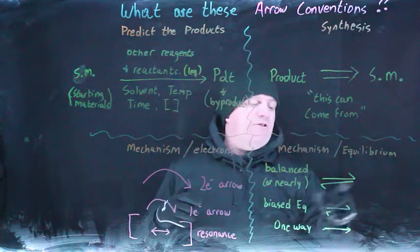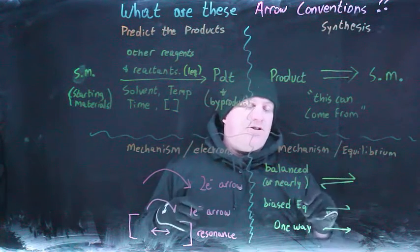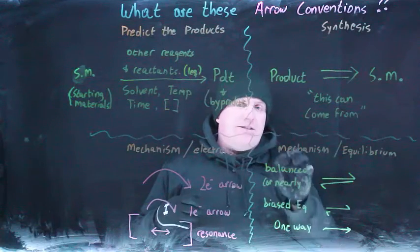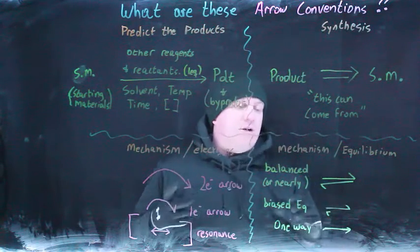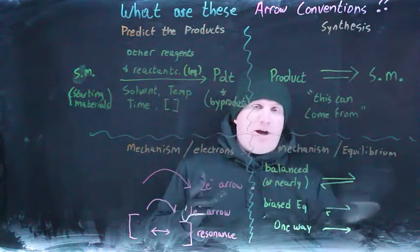Equilibrium arrows, if you see, they tend to have a long one direction, long the other direction, one barb on either side. What that tends to imply is that this is a balanced equilibrium. It doesn't necessarily mean that equilibrium is one, but it does mean that it's not biased too heavily in one direction or the other. So the idea is to go back and forth freely.